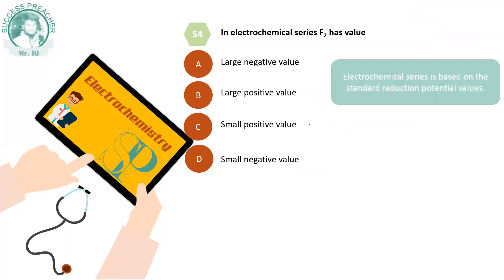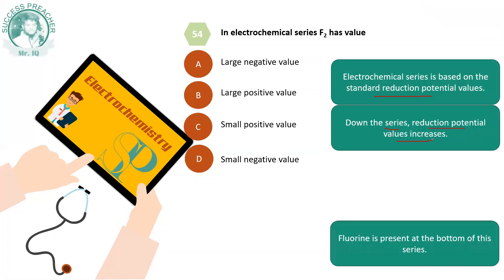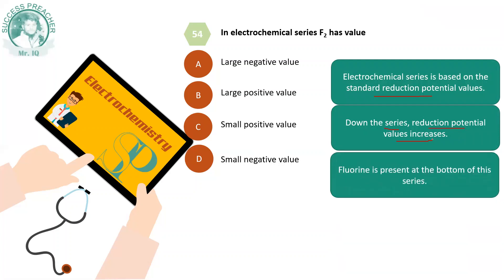The electrochemical series — F₂ has a certain value. How do we arrange elements in this way? The electrochemical series is based on the standard reduction potential values, arranged from lower to higher values going down the series, where the reduction potential value increases.